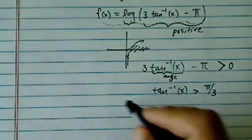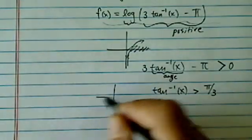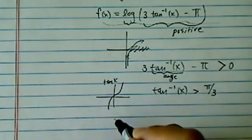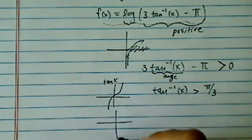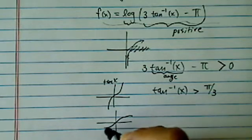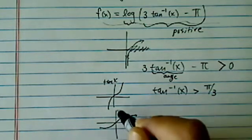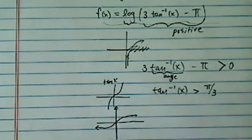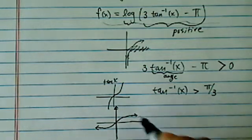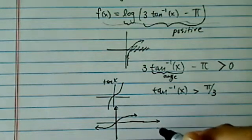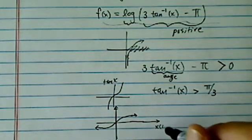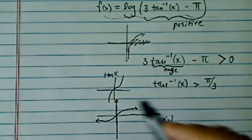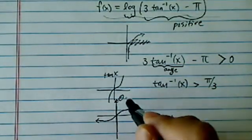Let's look at the tangent inverse and tangent curves. Let's start with the tangent curve first — this is tangent of x — so the inverse of tangent looks like a flipped version of that. This actually comes in handy for this particular problem. So this one is my x — those are numbers — and these are angles.